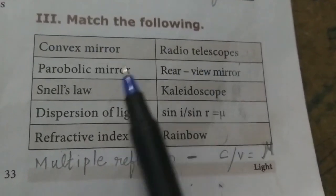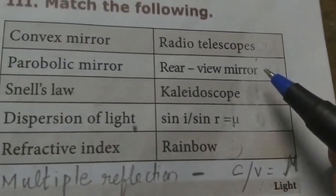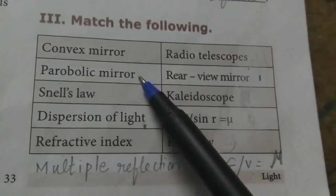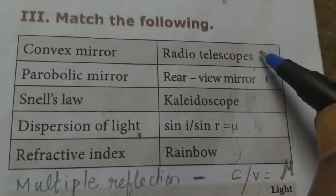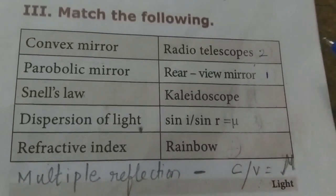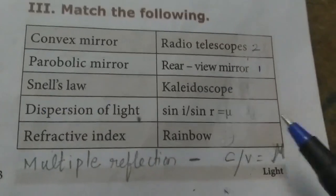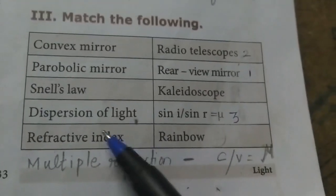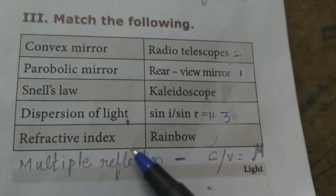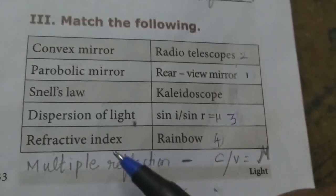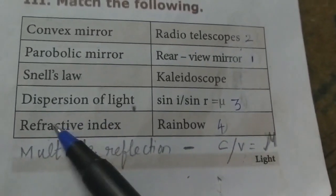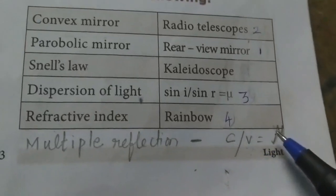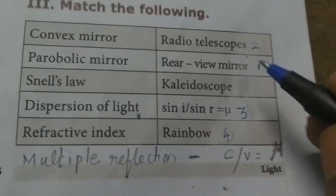Match the following. Convex mirror — rear view mirror. Parabolic mirror — radio telescope. Snell's law — μ = sin i / sin r. Dispersion of light — rainbow. Refractive index — μ = c/v. Multiple reflection — kaleidoscope.